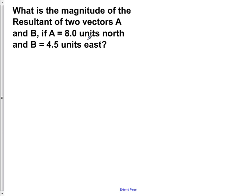What is the magnitude of the resultant of two vectors, A and B, if A equals 8 units north and B equals 4.5 units east?